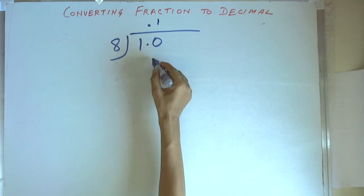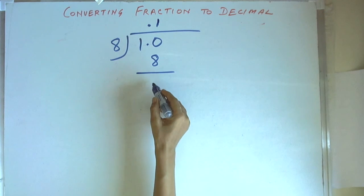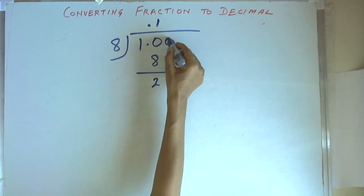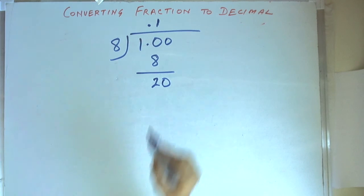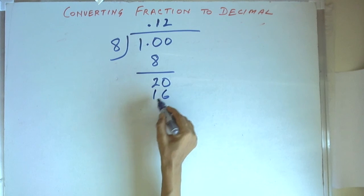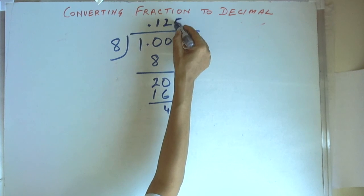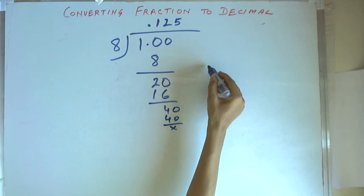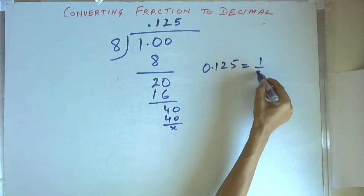Now 10 can be divided by 8. We get 1 with remainder 2, giving us 20. We put one more 0 here. 20 by 8 gives us 2 with remainder 4, giving 40, then 5 with remainder 0. So the answer is 0.125, which equals 1 by 8.